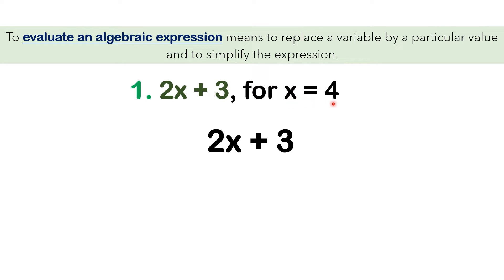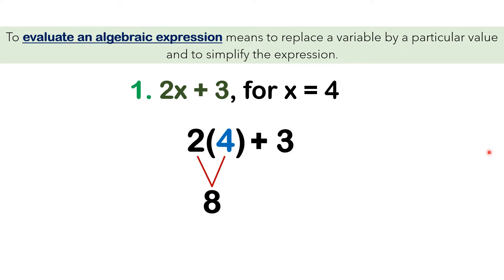The value given for x is 4. Therefore, we will remove the variable x and change it with 4. So now we have 2 times 4 — that is from 2x. 2 times 4, just multiply: you will have positive 8. After that, bring down positive 3. 8 plus 3 will give you 11. So, 11 is the value of 2x plus 3 if x is equal to 4.